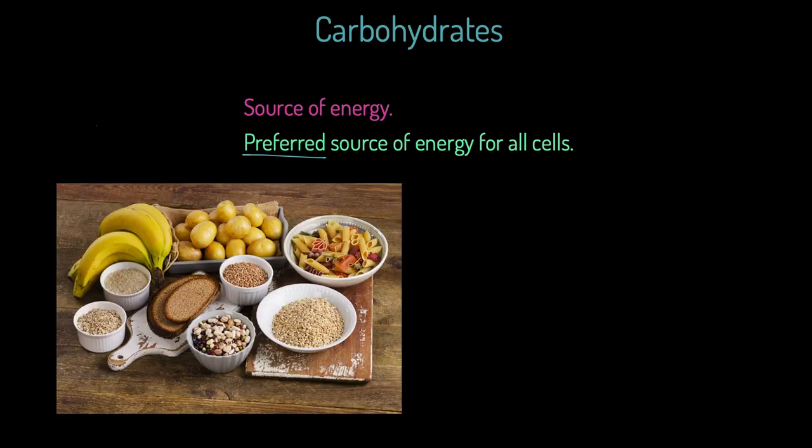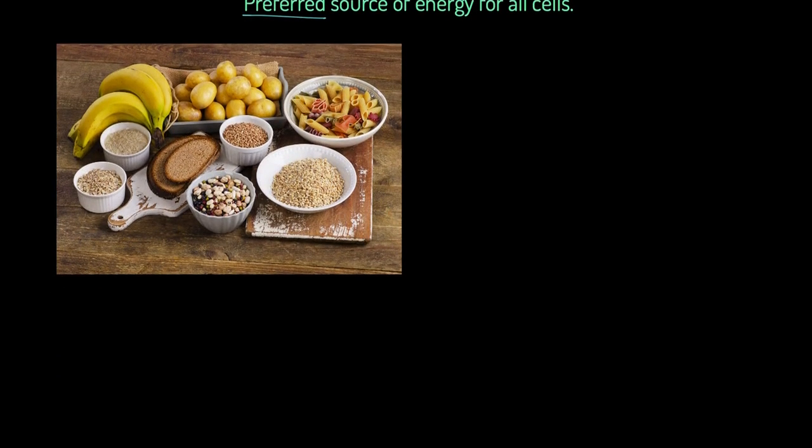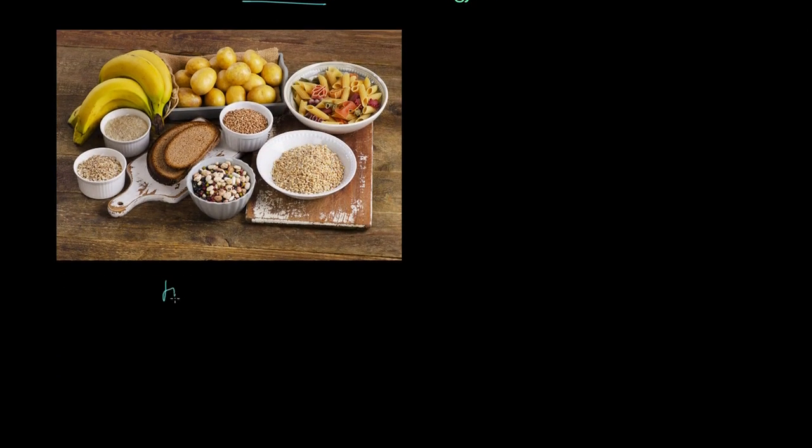You see here we've got our potatoes, our pasta, our rice, our cereals, our bread, our fruits, our vegetables in some cases, our grain. These are carbohydrate examples. And I just want to make it crystal clear that we have two types of carbohydrate. The first type is what we would refer to as starches, and I'm going to look at these in quite a bit of detail in a moment.